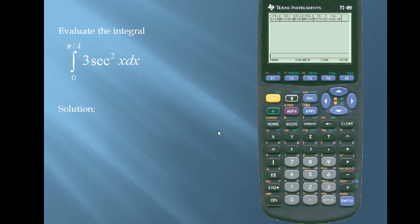Let's take a look at another example. Let's evaluate the integral from 0 to pi over 4 for the expression 3 secant squared x dx.